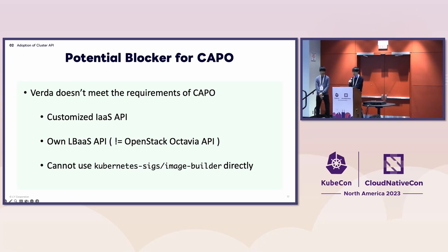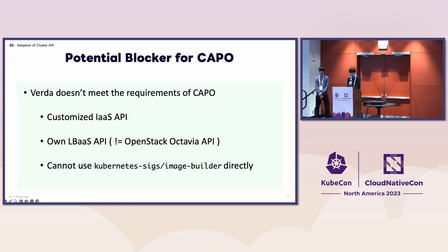We tried adopting CAPO — the Cluster API Provider OpenStack — however, we weren't able to adopt it directly. Most use cases should be covered by CAPO, but we have several company-specific limitations. Verda uses its own customized API for both infrastructure as a service and load balancer as a service, so forking CAPO would be required. Also, we cannot use the community-provided image builder because of our internal image management policy. We don't want to maintain an internal fork anymore.